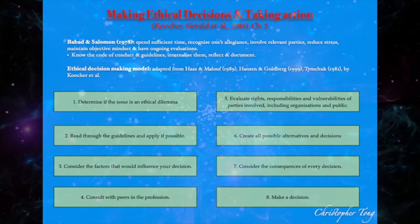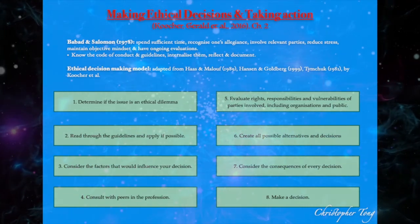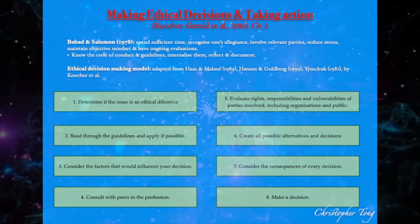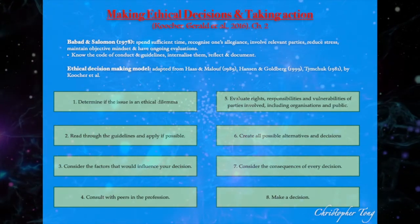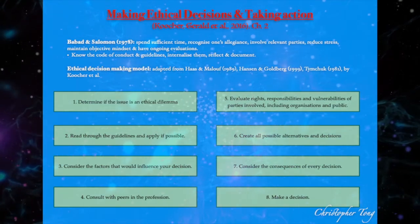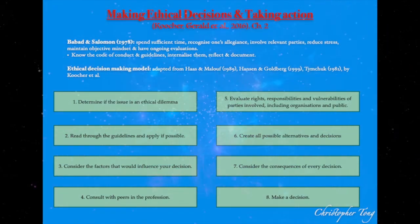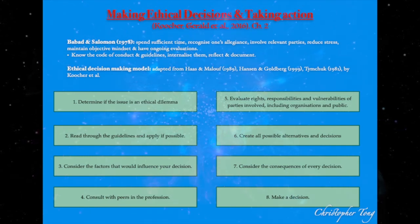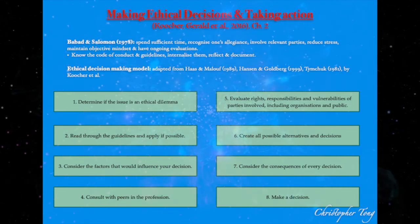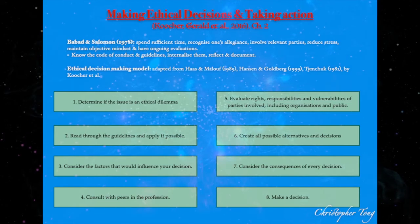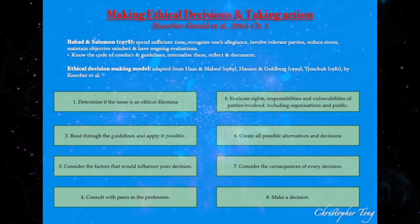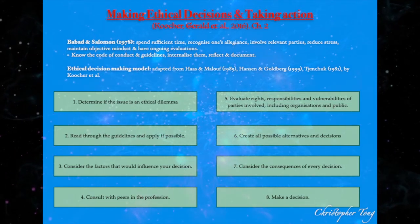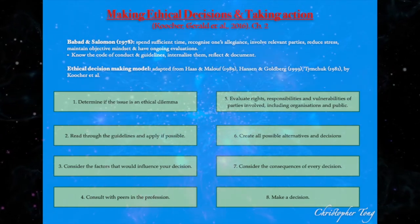Step 1: Determine if the issue is an ethical dilemma. This involves identifying ethical principles that may be affected or breached in the certain circumstances. Read through the guidelines for the application of possible resolutions — this is a process of collecting relevant information.